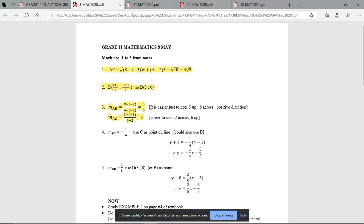Mr. Norman's added in here, it is easier just to note 5 up and 6 across, and it's a positive direction. So you're going to eventually get quite good at working out gradient, and instead of doing the whole bunch of calculations, it's quite easy just to spot that you're moving 5 up as in Y and 6 across as in X. Same with AC, 2 across and 6 up for AC.